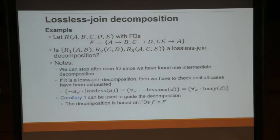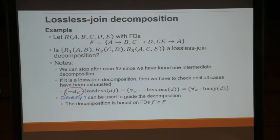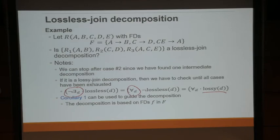We can stop after case two because you just need to check for the existence of one possible decomposition. But to prove that something is NOT a lossless join is very hard because you have to check everything — for all possible D, you get a lossy decomposition. This is a very hard problem. Lossy joint is harder to prove, but corollary one can be used to guide your decomposition.